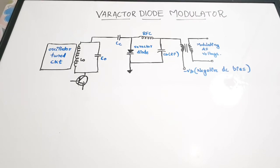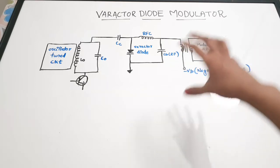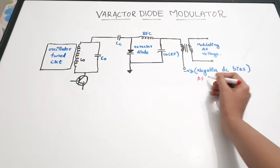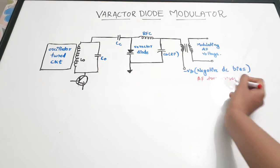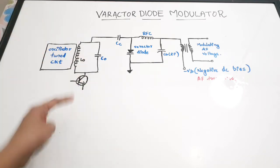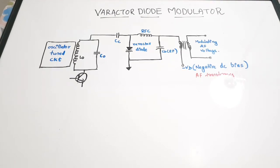First we are going to discuss about the varactor diode modulator. This varactor diode modulator can be classified into three sections: the AF section, where you provide your audio frequency signal (the modulating signal); the AF transformer section; and the varactor diode section. There is also an oscillator tuned circuit. Based on the applied AF signal's instantaneous voltage level, the frequency has to change.